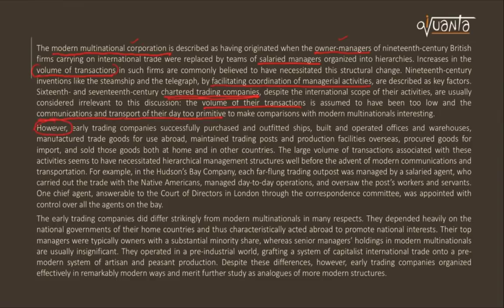However, the author goes on to contradict this view. Early trading companies successfully purchased and outfitted ships, built and operated offices and warehouses, manufactured trade goods for use abroad, maintained trading posts and production facilities overseas, procured goods for import, and sold goods both domestically and internationally. So these early trading companies had fairly complex and multiple functionalities.